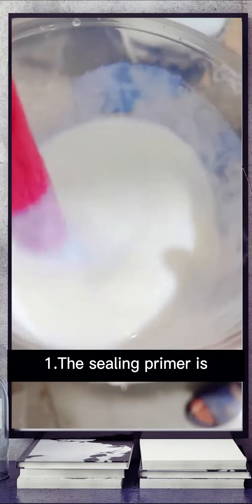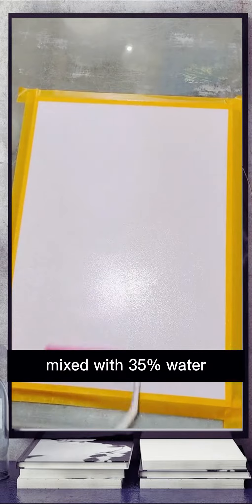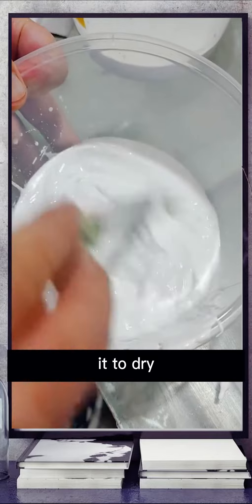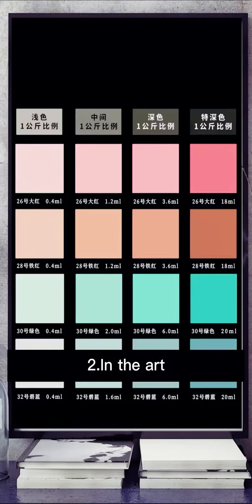First, the sealing primer is mixed with 35% water and applied evenly with a roller. Then wait for it to dry.